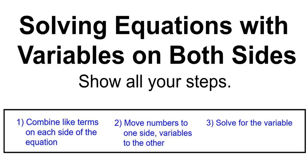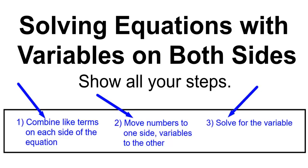Solving equations with variables on both sides. Show all your steps. Step number one: combine like terms on each side of the equation. Step number two: move the numbers to one side and the variables to the other. And step number three: solve for the variable.